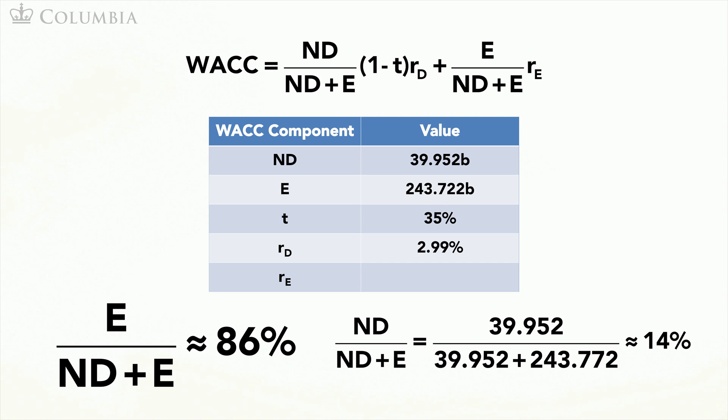There is one more issue to tackle here. As opposed to equity, debt comes with different maturities. The rate of return offered on debt of different maturities is not the same. It is common practice to use a 10-year maturity as an approximation to the average maturity of a firm's debt. Looking at the rate of return offered by similar debt, I estimate the cost of debt at 2.99%. We can now add this value to our table of weighted average cost of capital inputs.